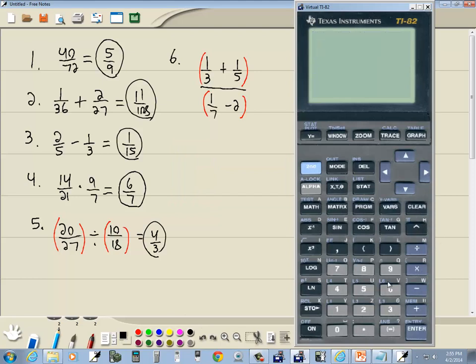So I'll clear that. I'll do a beginning parenthesis 1 divided by 3 plus 1 divided by 5, closing parenthesis divided by beginning parenthesis 1 divided by 7 minus 2 and then closing parenthesis. Then we do enter and we get a decimal, so we then do math, enter, enter, and that gives us negative 56 over 195.